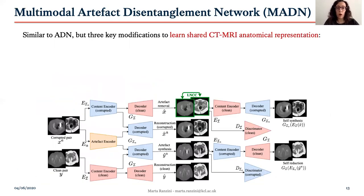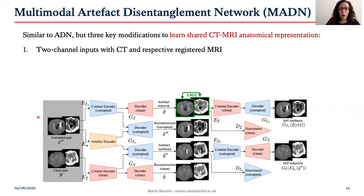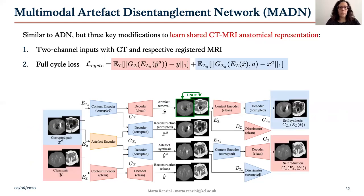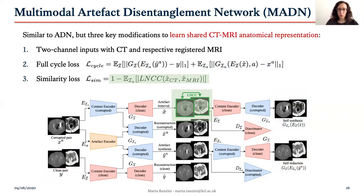The ADN sets the theoretical framework for our extension, the multimodal artifact disentanglement network. On top of the described network, we introduced three key modifications to learn shared CT and MRI anatomical representations. First, the network is fed with two-channel inputs, both for the corrupted and the clean pathways — the two channels being the CT and the respective registered MR from the same subject. Second, a full cycle loss is used, composed of a self-reduction loss already present in ADN and a self-synthesis loss on the corrupted input. Finally, the most important modification is the introduction of a loss term to maximize the similarity between the two output channels after artifact removal, which further enforces the sharing of information between the modalities.